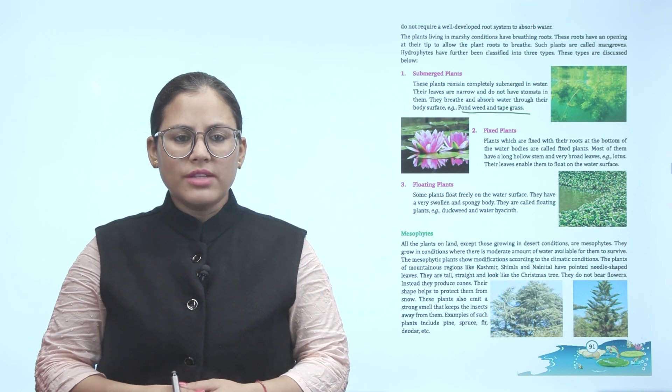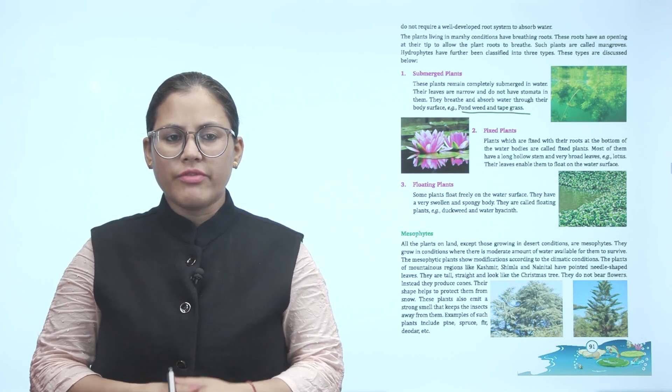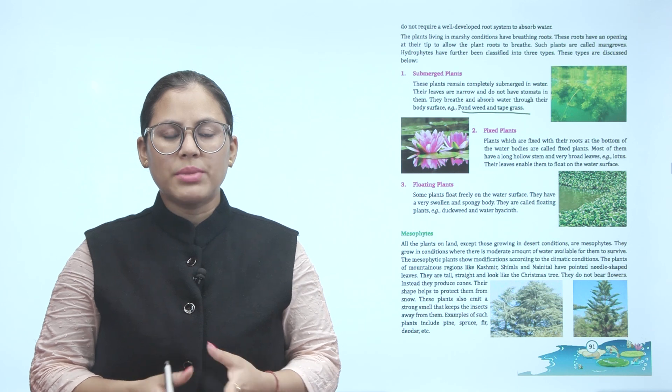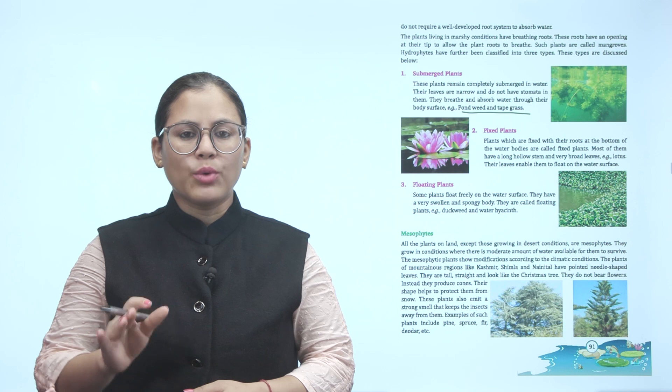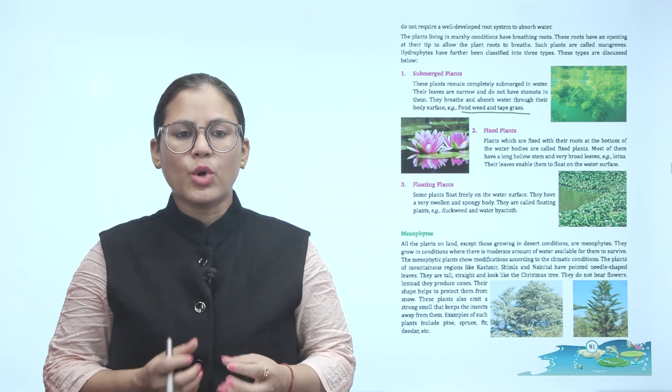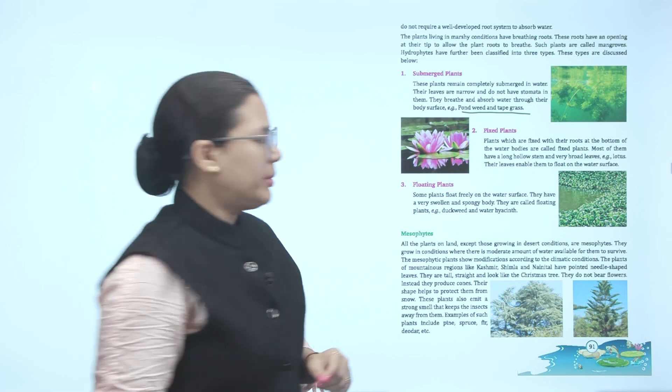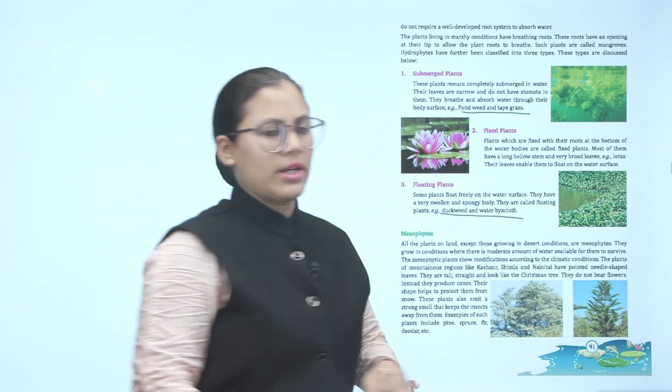Floating plants. Some plants float freely on the water surface. They have a very solid and spongy body. They are called floating plants. Example: duckweed and water hyacinth. Some plants freely float on water surface with spongy and solid body.